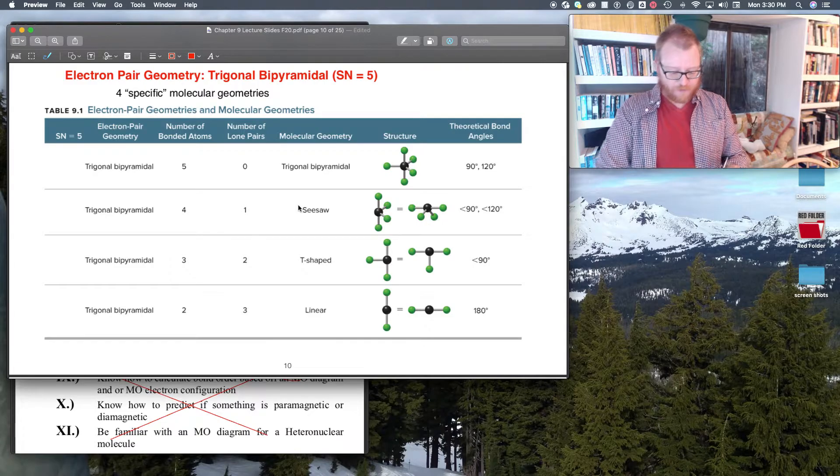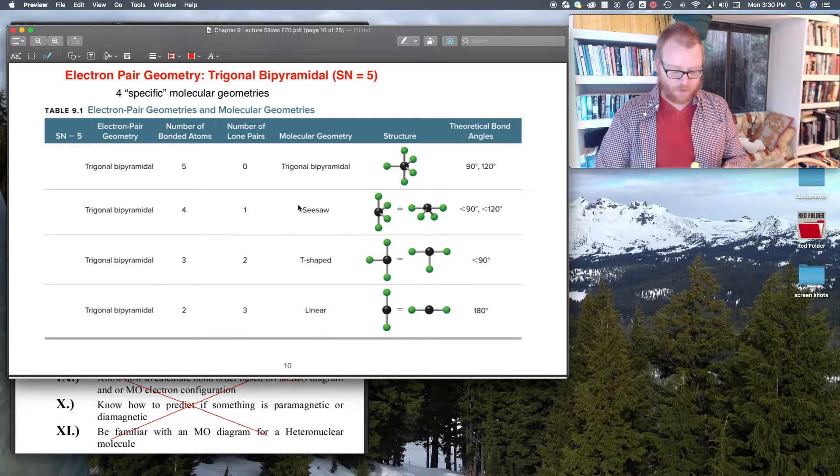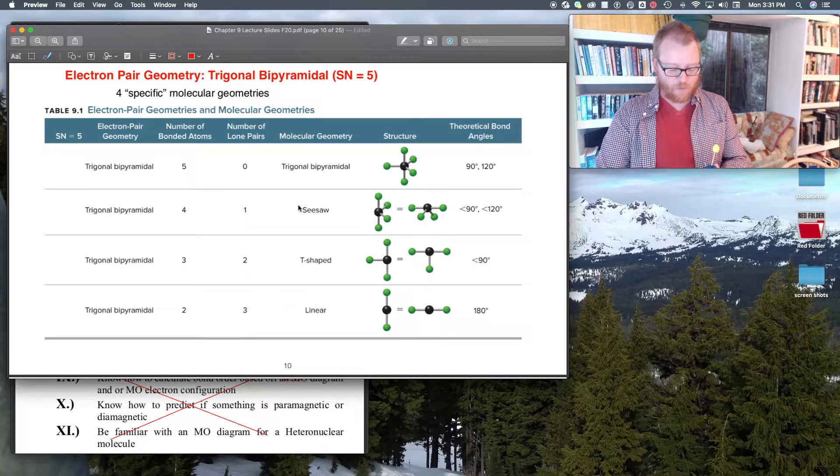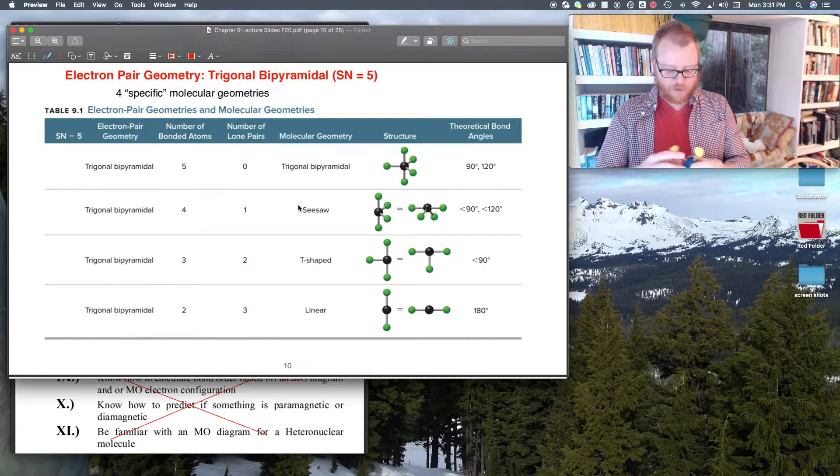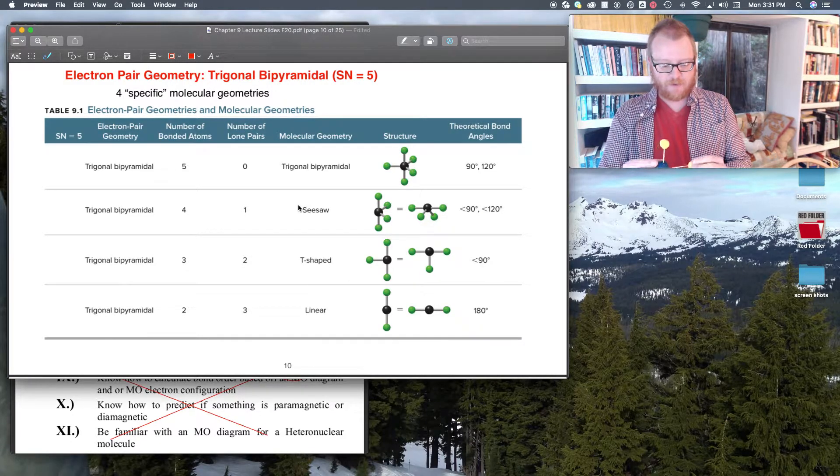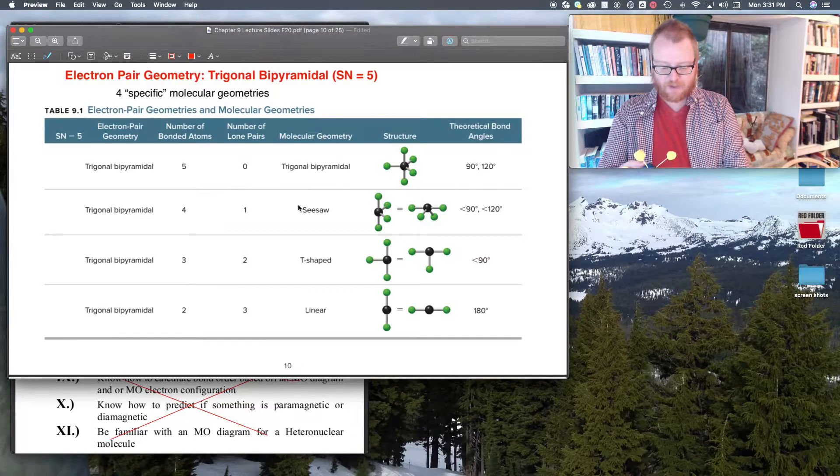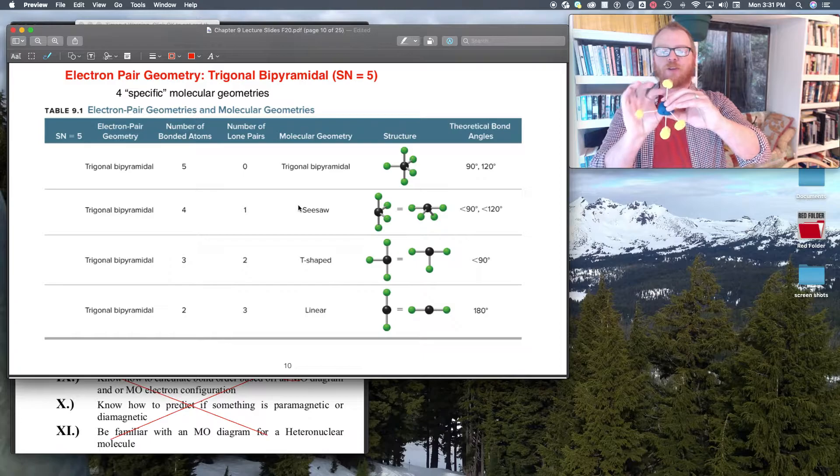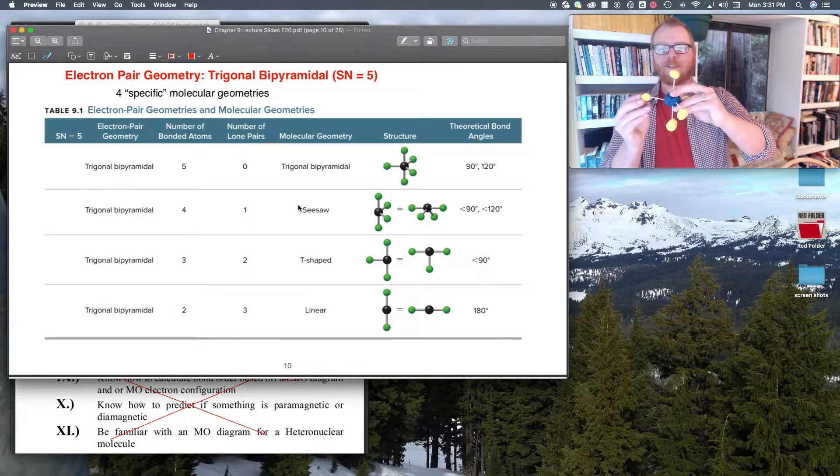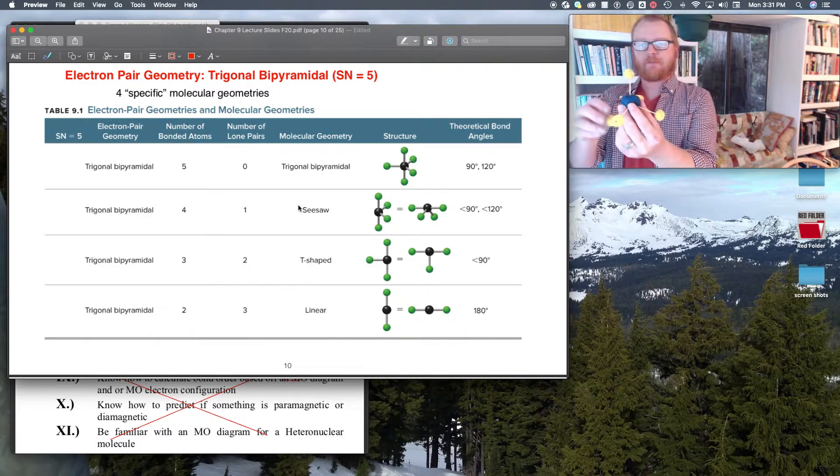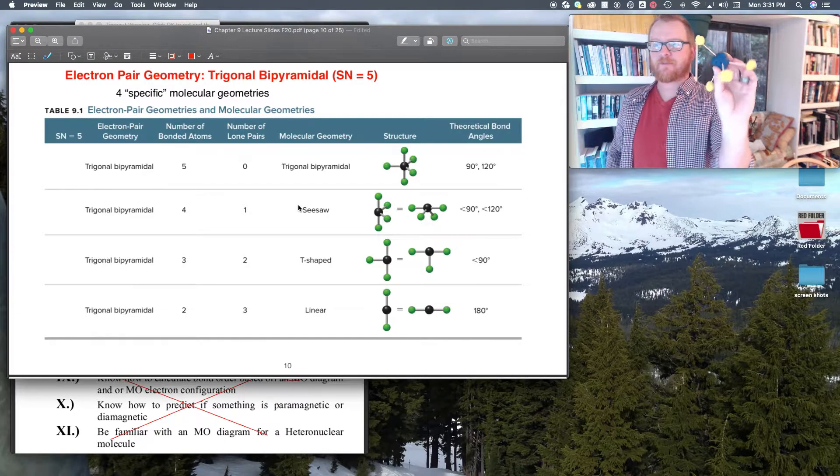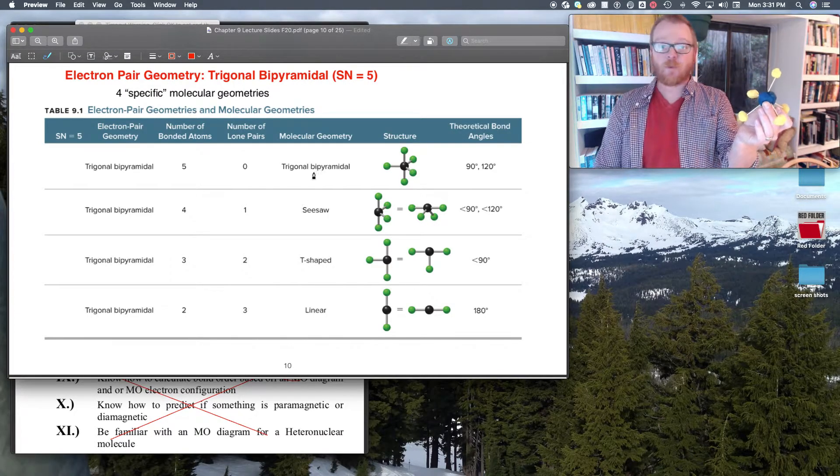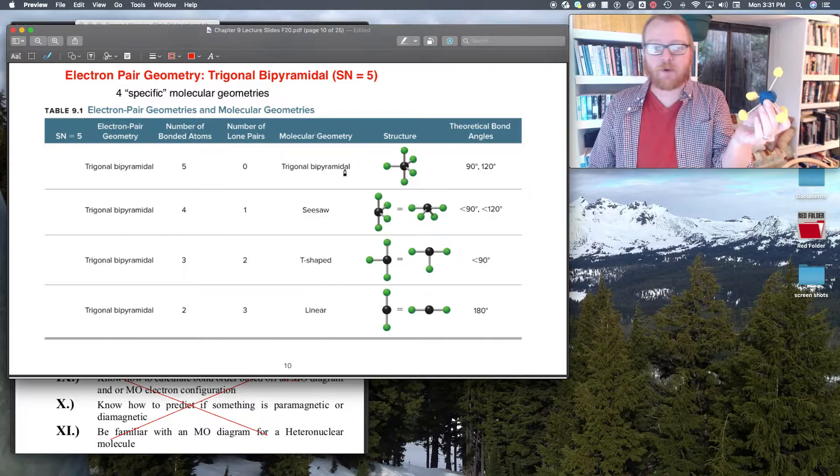So when I have all five of these being bonds, let's put atoms around here and hope my play-doh and toothpicks can handle five bonds here. So when I've got five bonds to five atoms, we just call it also trigonal bipyramidal.